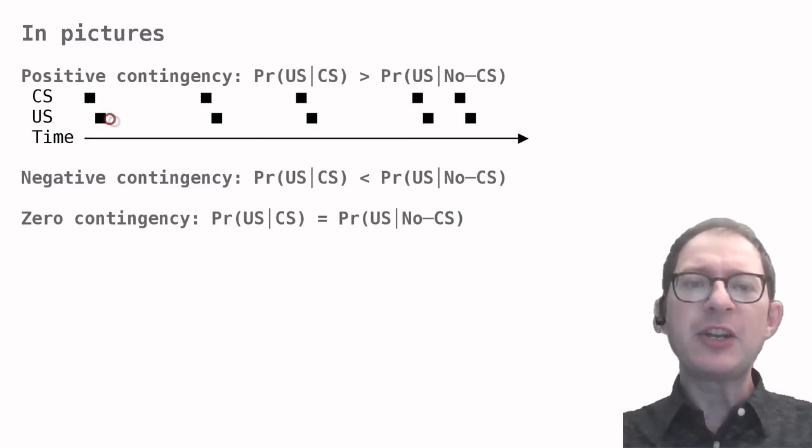If the animal can learn this, it will be able to predict exactly when the US occurs from observing the CS. In addition, the animal would be sure that the US never occurs on its own.